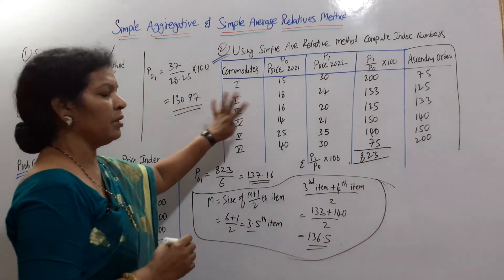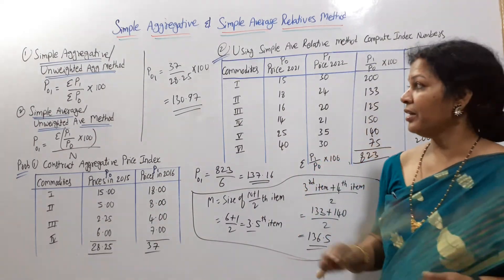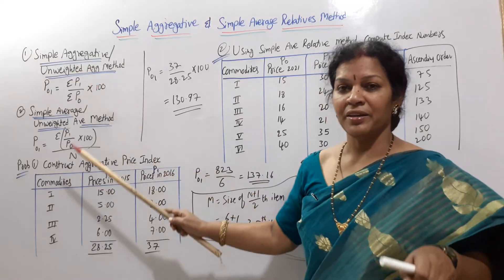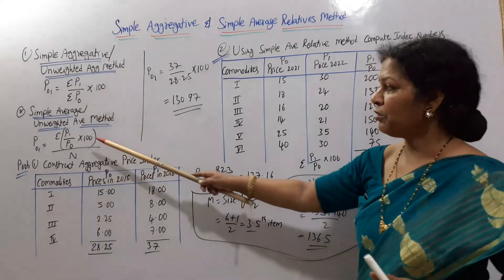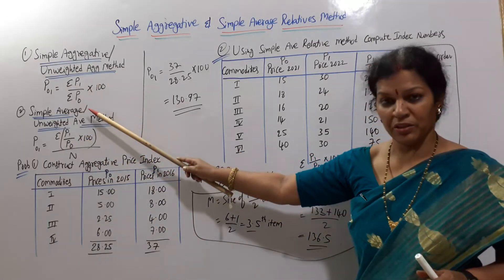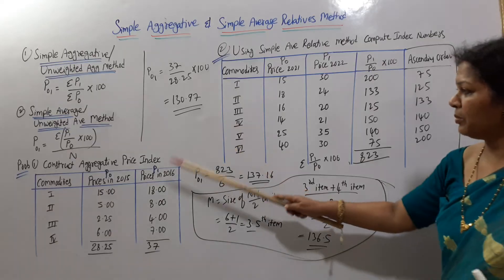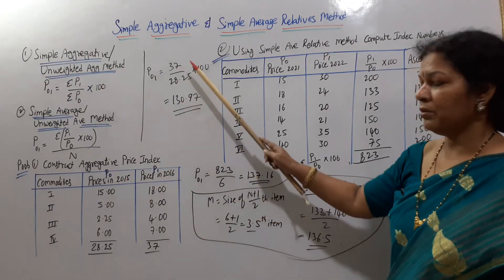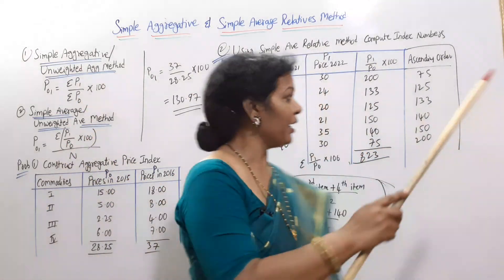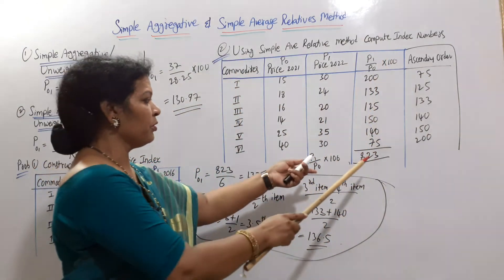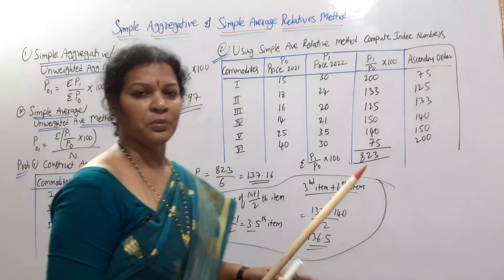Do not get confused. In this class, we covered the main unweighted methods: aggregative method and average method. The aggregative formula is sigma P1 by sigma P0 into 100. The average method formula is sigma (P1 by P0 into 100) divided by n — the same expression but divided by n. These two problems use P1 and P0 columns to compute the total formula.